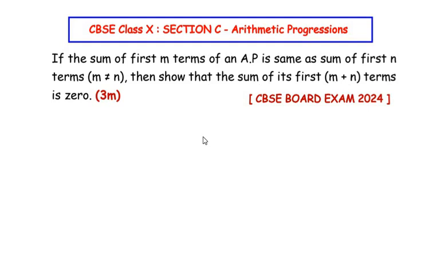Let us understand the question first. They have said that if the sum of first m terms of an AP is the same as the sum of first n terms — so we need to make use of the sum of first m terms formula. Since m is not equal to n, they could be, for example, 10 terms and 20 terms. If the sum of m terms equals the sum of n terms, we have to show that the sum of first m plus n terms is zero. Let us begin by writing the sum of first n terms of an AP formula.